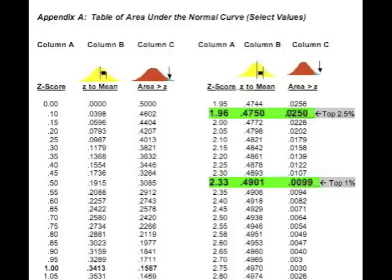The two highlighted green areas in the table represent a Z-score of 1.96 and a Z-score of 2.33. Both of these are very common Z-scores used in statistical inference.